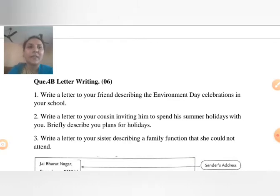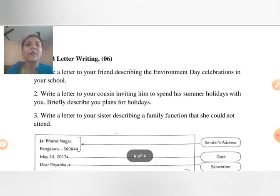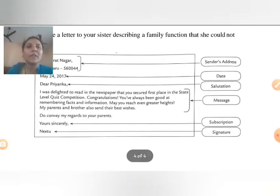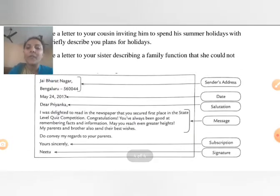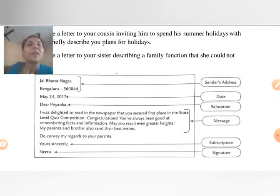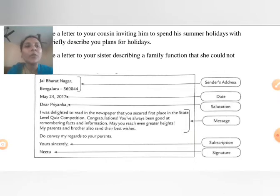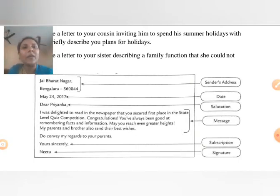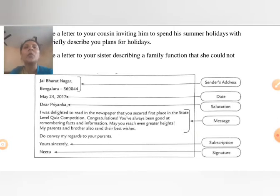Letter writing has already been explained. Let's discuss ahead about the letter writing. Here I have written an example of letter writing. First of all, at the top will come the sender's address — for example, Jay Bharat Nagar, Bengaluru, with PIN code number. It is an informal letter, so you have to write the sender's address.